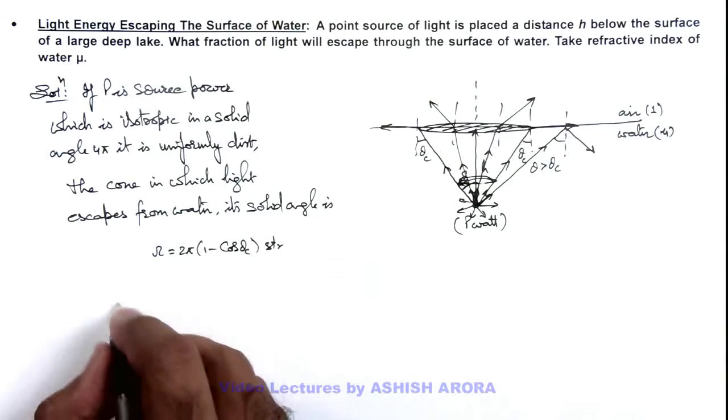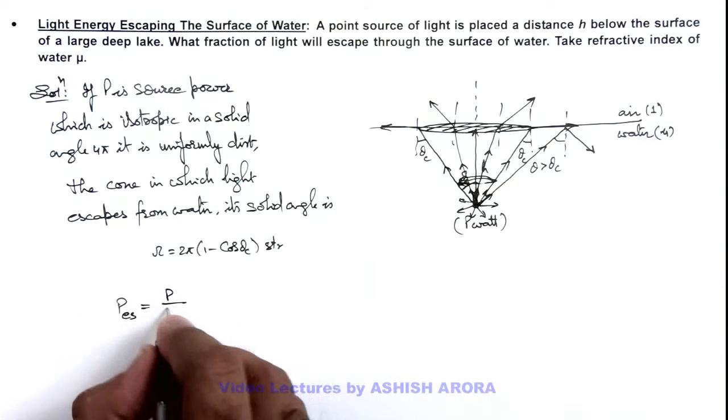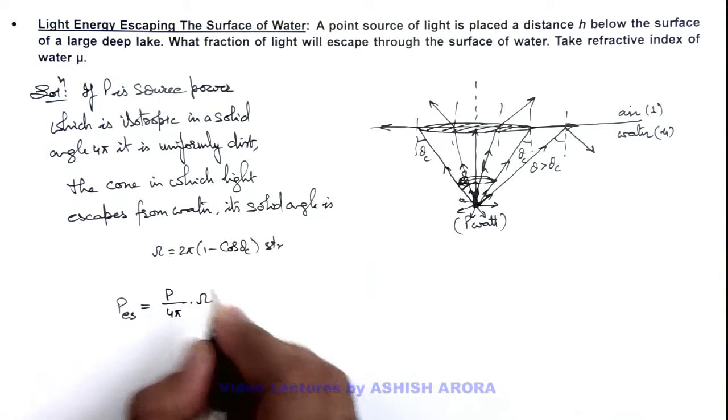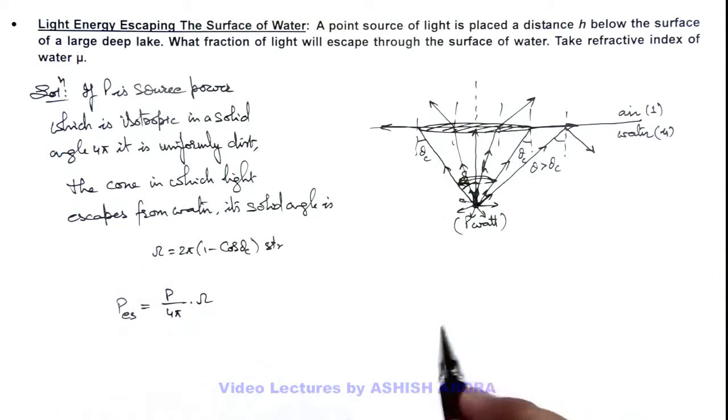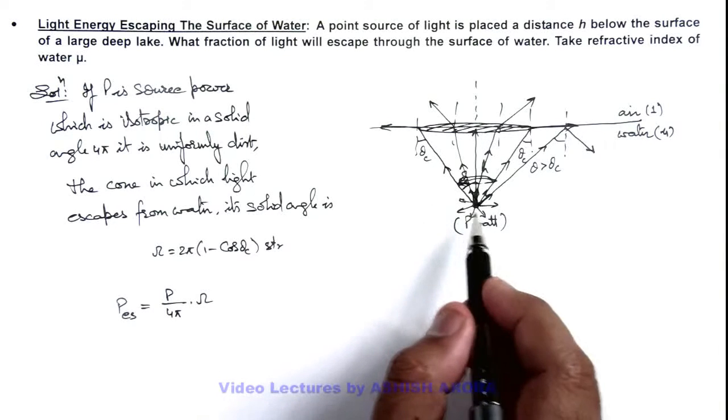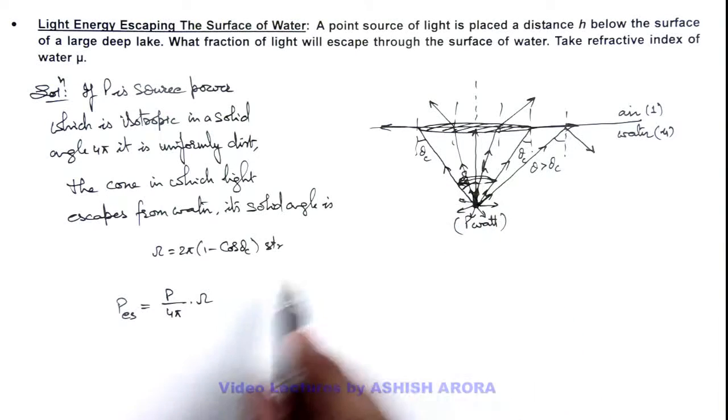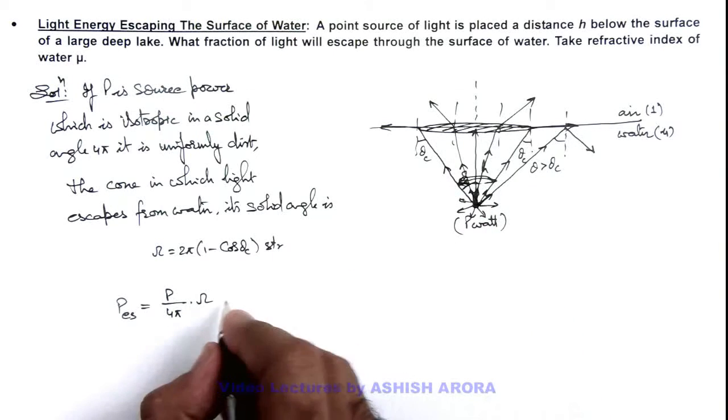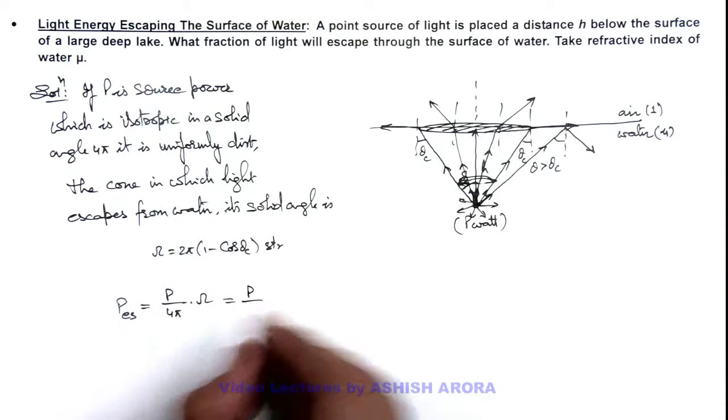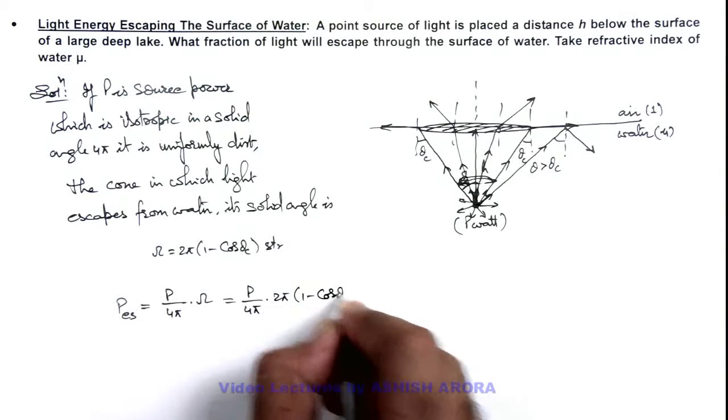So in this situation we can write the power which escapes can be written as P divided by 4π multiplied by the solid angle of this cone. As the whole power is uniformly distributed in a solid angle 4π, within this cone of half angle θc the light can be given by this relation. We substitute the value of solid angle: it is P by 4π multiplied by 2π(1 - cos θc).